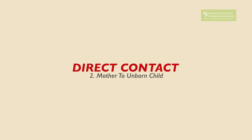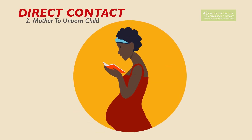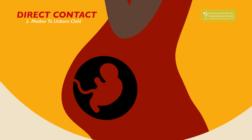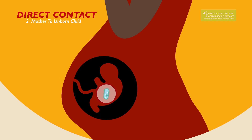Mother-to-unborn child: a pregnant woman may pass germs that cause infectious diseases to an unborn baby. Some germs can pass through the placenta. Germs in the vagina can be transmitted to the baby during birth.